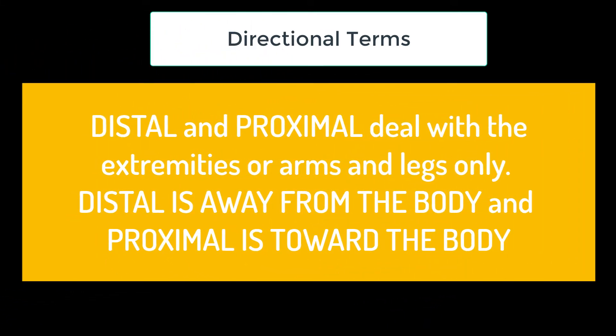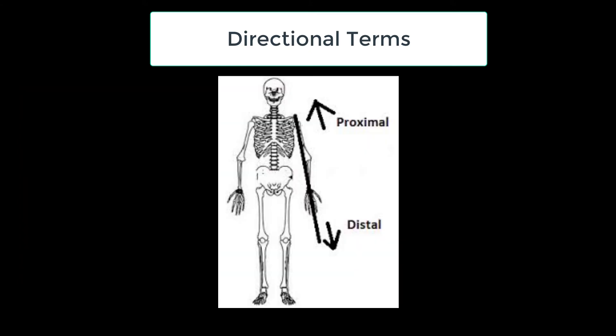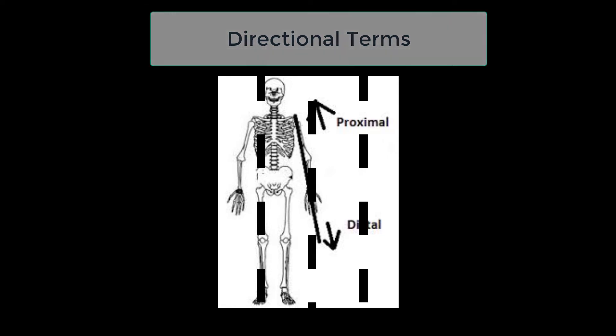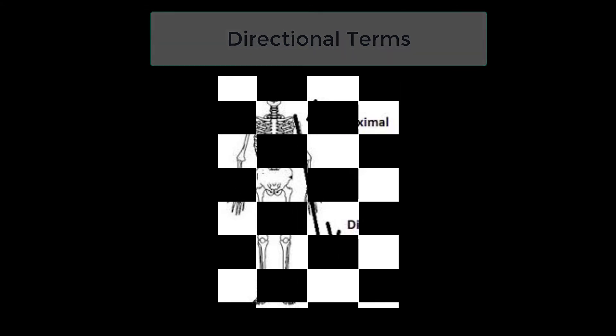Distal and proximal deal with the extremities or arms and legs only. Distal is away from the body or the core and proximal is toward the body or the core. Please pay attention to the skeleton. Anything toward the body is proximal, anything away from the body is distal.